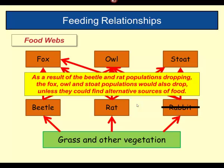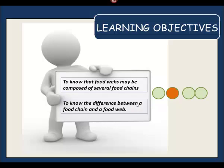So I hope you understand now the difference between a food web and a food chain. Food webs may be composed of several food chains — big tick. And we know the difference between a food chain and a food web — big tick there too.